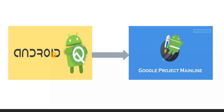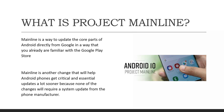From Android Q onwards, also called Android 10, Google has introduced Project Mainline. This alters how Android operates as an operating system, with more power now resting in the hands of Google than ever before. Mainline is a way to update the core parts of Android directly from Google in a way that's familiar — through the Google Play Store.